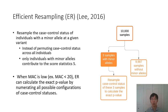Although SPA performs much better than normal approximation, SPA is still an asymptotic-based approach, which means when the minor allele count is very small, SPA can still result in very inaccurate p-values. This is the motivation why we incorporate efficient resampling in our model. Efficient resampling is a resampling technique, but it only resamples the case-control status of individuals with a minor allele at a given variant, instead of permuting case-control status across all individuals. This is because only individuals with minor alleles contribute to the score statistics S, which saves huge computation time and memory.